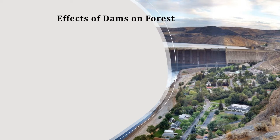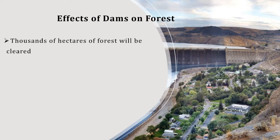Effects of dams on forests: today there are more than 45,000 large dams around the world which play an important role in communities and economies by harnessing water resources for economic development. It is estimated that some 30–40% of irrigated land worldwide relies on dams. Dams are considered a temple of modern India. However, dams disrupt vast areas of forest land.